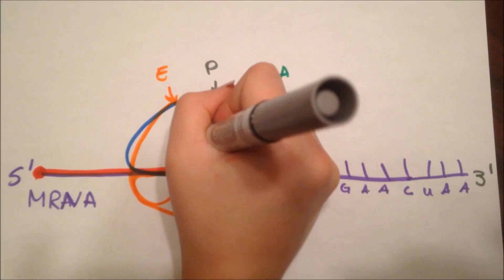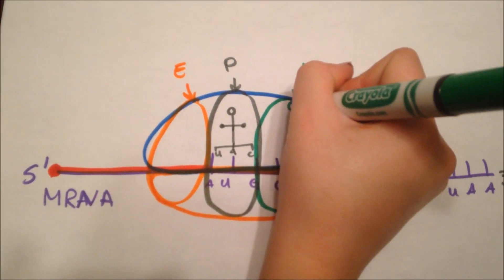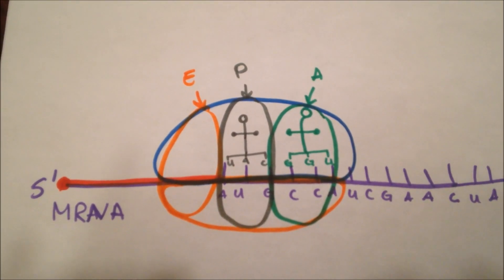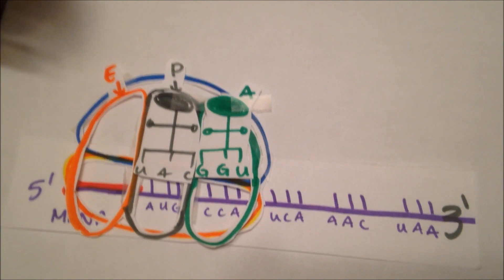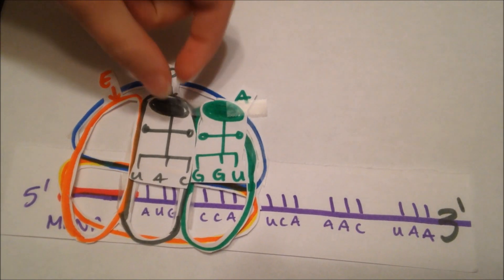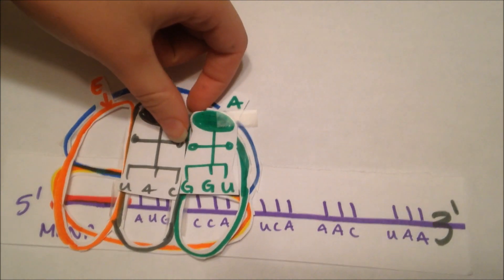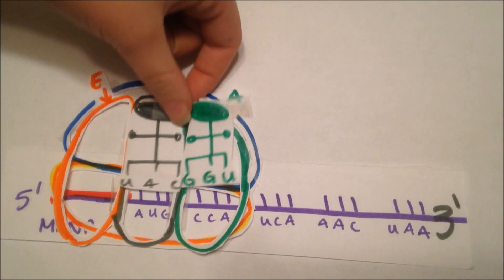Now the tRNA comes into the p-site. A second tRNA molecule enters the a-site. The amino acid on the tRNA molecule in the p-site, methionine, gets transferred to the a-site amino acid, with the help of peptidyl transferase, forming a peptide bond between the two amino acids.